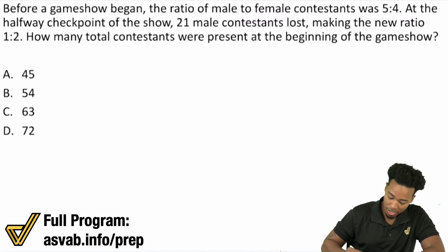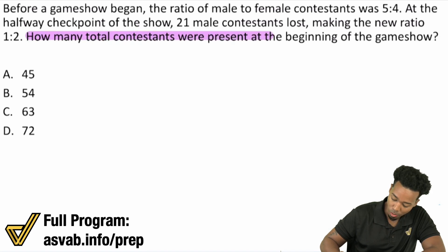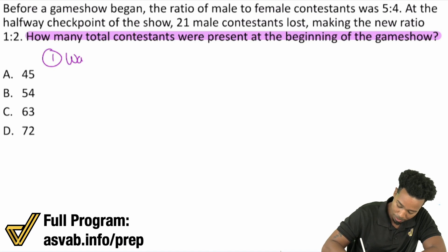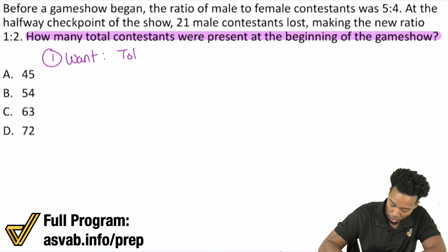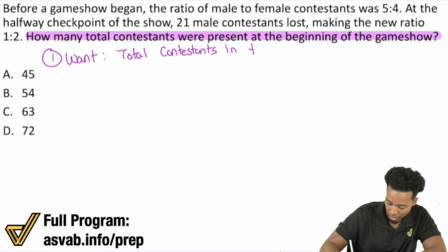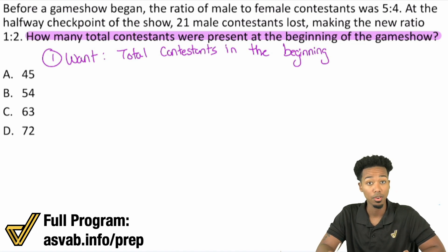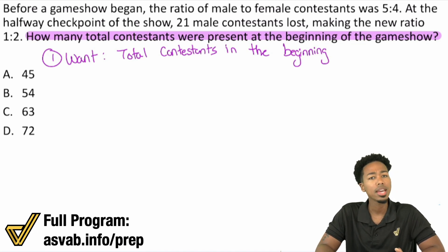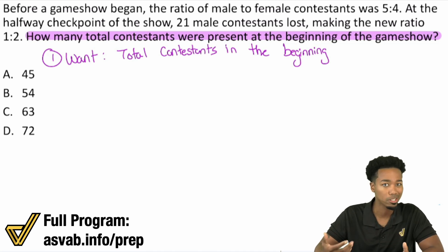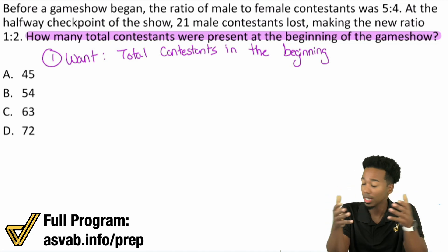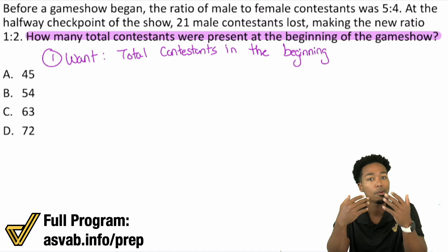Step one — what do you want — means what is the question? The question right here is: how many total contestants were present at the beginning of the game show? So what we want is the total contestants in the beginning. Understanding what the question is asking is really all related to the story.